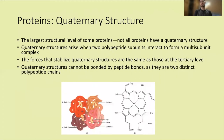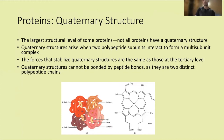Quaternary structure is the largest structural level of some proteins, and it's important to note that not all proteins have it. It arises when two or more polypeptide subunits interact to form a multi-subunit complex — like hemoglobin, which has four subunits. The forces stabilizing quaternary structures are the same as those at the tertiary level. Quaternary subunits cannot be bonded by peptide bonds; if they were, it would just be one polypeptide chain and considered tertiary structure.